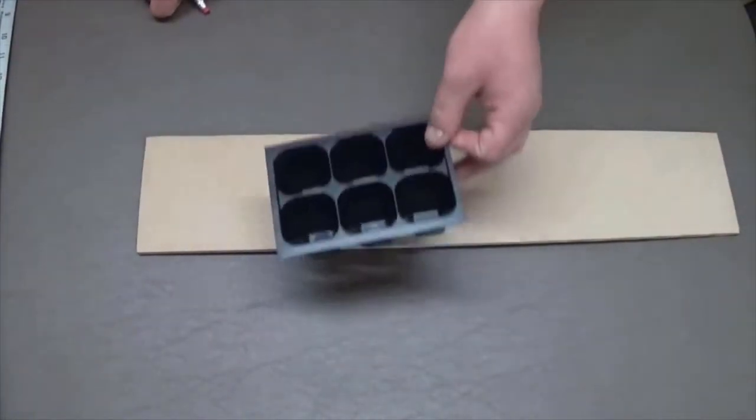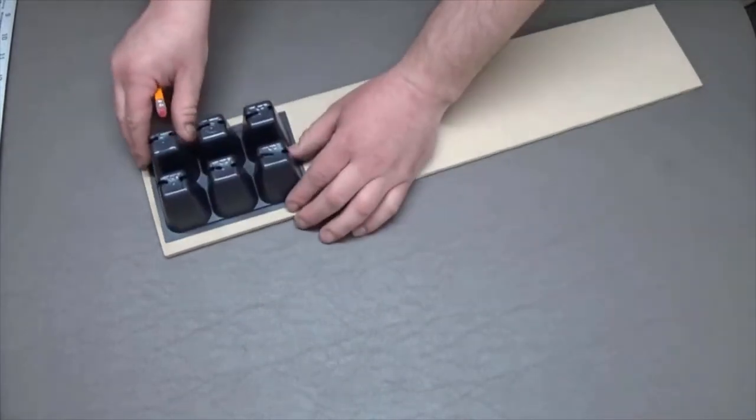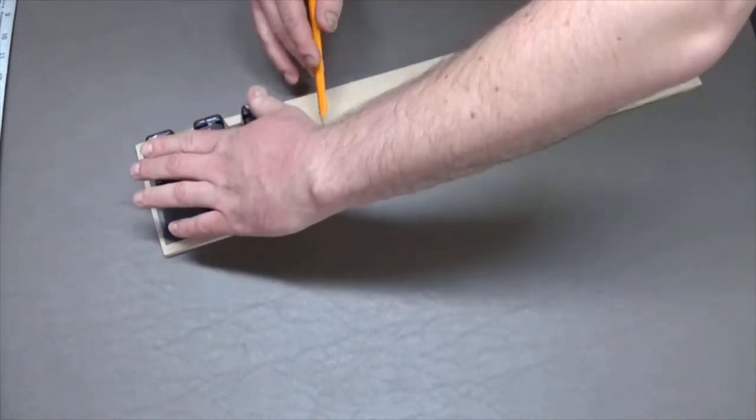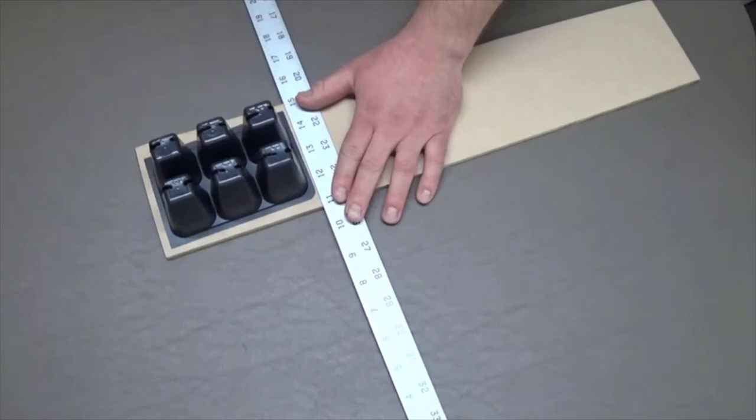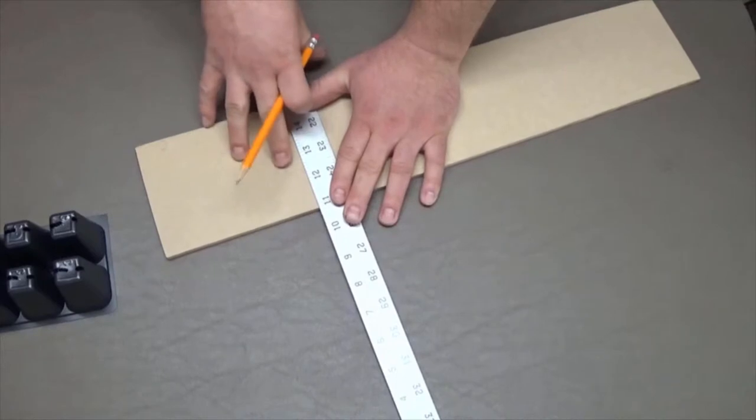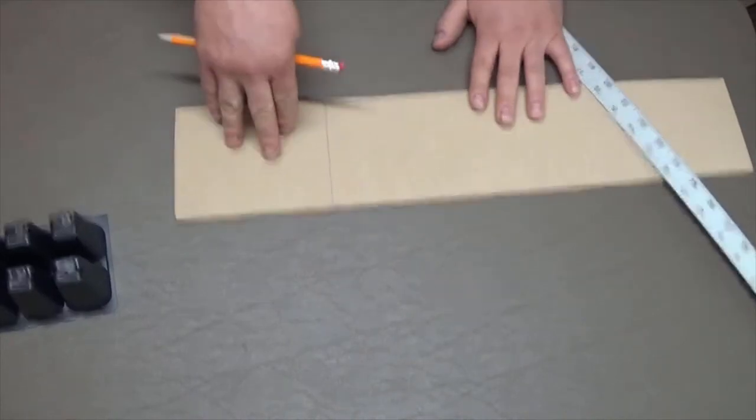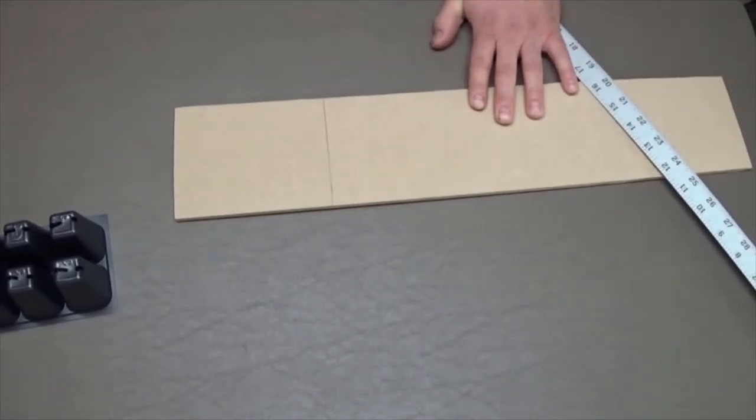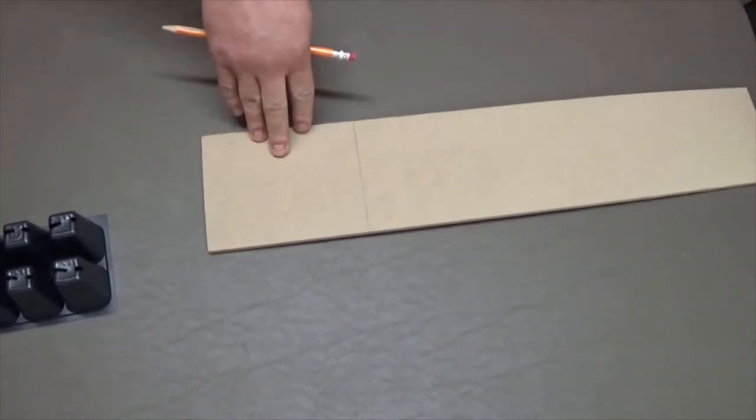We happen to have some scrap wood from that other project that we did. What we're going to do is take this and very quickly measure out a little press board. These measurements don't really need to be precise, but they can all be straight. We're going to mark our board, and because we already know the dimensions that we need, we can save time to drill at the exact same time.